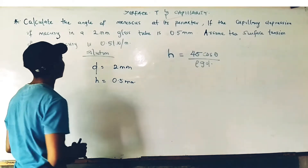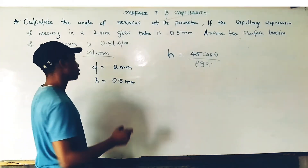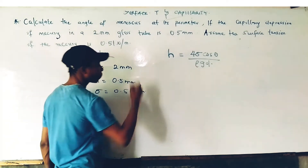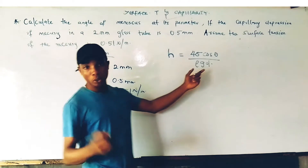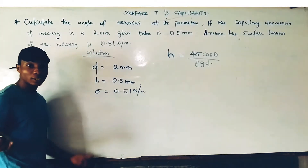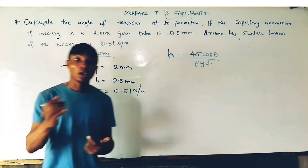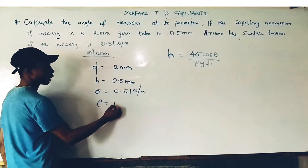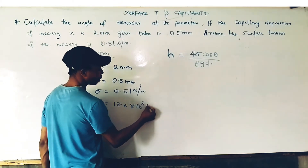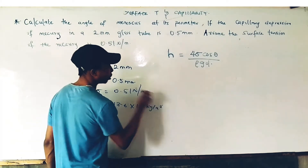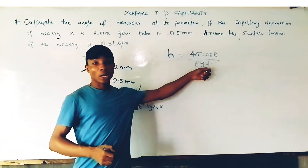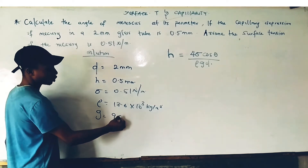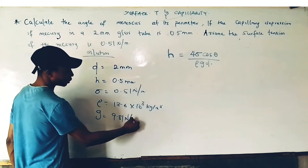The surface tension of mercury is given as 0.51 N per meter. The standard density of mercury is 13.6 × 10³ kg per meter cubed. Acceleration due to gravity g = 9.81 meters per second squared.